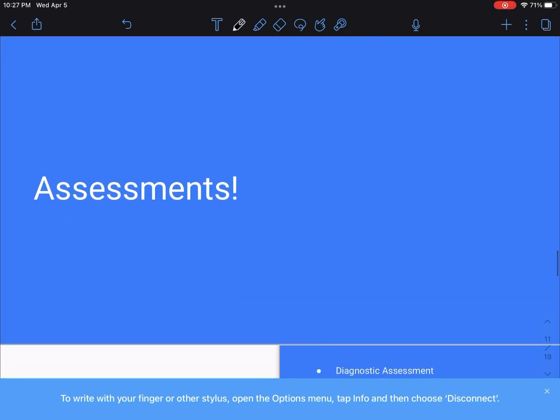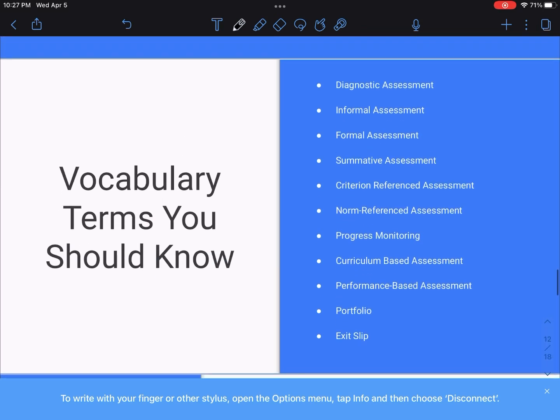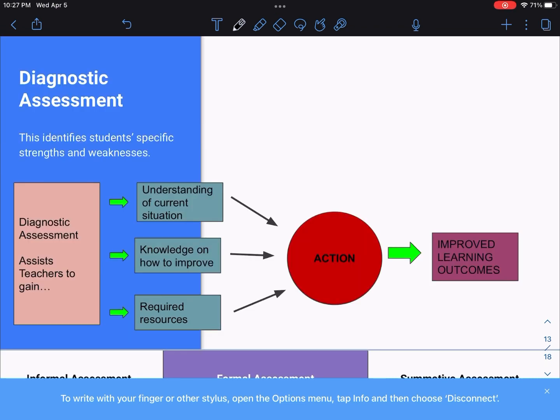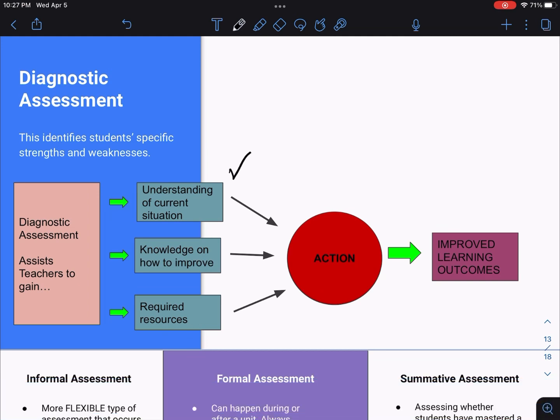Now let's talk about assessments. Here are some vocabulary terms you should know. We are going to go over these individually. Let's start with diagnostic assessment. This identifies the student's specific strengths and weaknesses. Diagnostic assessment assists teachers to gain understanding of the current situation, to get knowledge on how to improve, and to find the required resources that you need to take action for your class. You gather all that together from your assessments, you take action, you start teaching, and you will get improved learning outcomes.